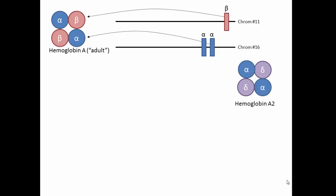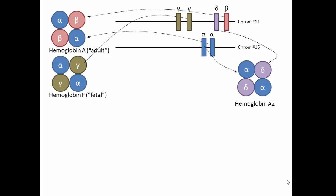A minor hemoglobin, hemoglobin A2, has two delta chains also on chromosome 11 and two alpha chains from chromosome 16. Fetal hemoglobin is made from two gamma chains also from chromosome 11 and two alpha chains from chromosome 16.